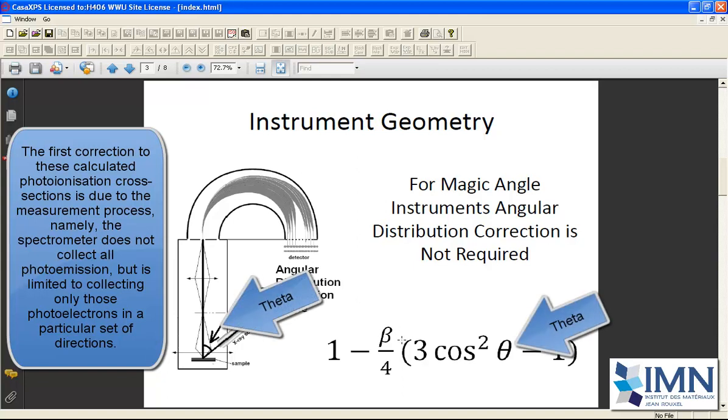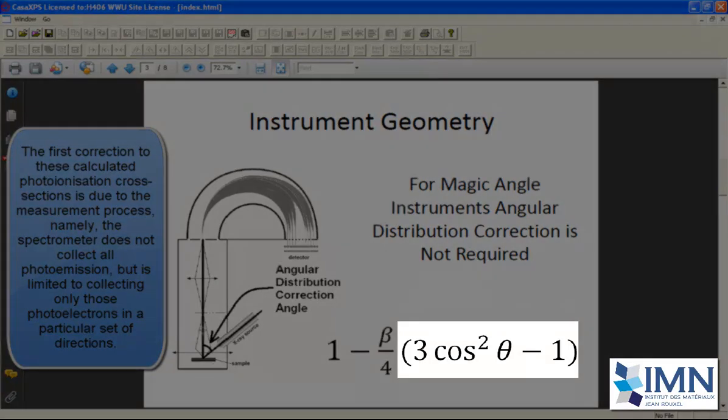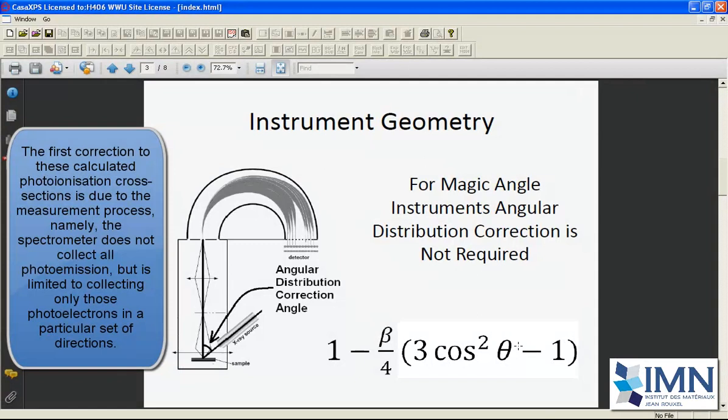And there is an expression here and a calculated value, this beta, that depends on physics. This angle theta here enters into the calculation in terms of this polynomial in terms of cosine theta. If we choose the angle between the x-ray source and the axis of the analyzer to be the so-called magic angle, then this term vanishes, and we don't have to consider this as part of the calculation of the peak intensity.